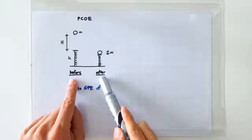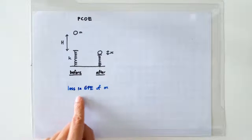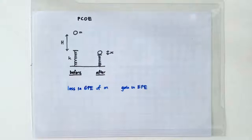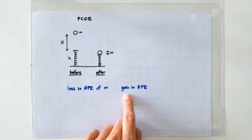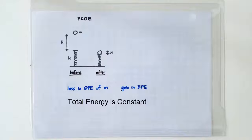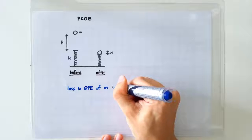So between these two instances, the ball has dropped through a vertical height, so there's a loss in GP. Between these two instances, the spring has also become compressed, so there's a gain in elastic potential energy. Without any external force doing work on this system, the total energy of the system should be the same that allows us to equate the losses to the gains.